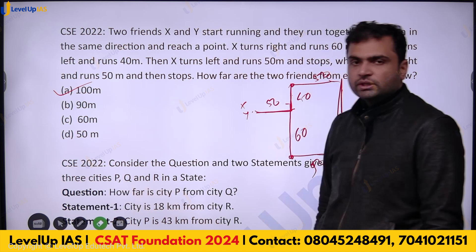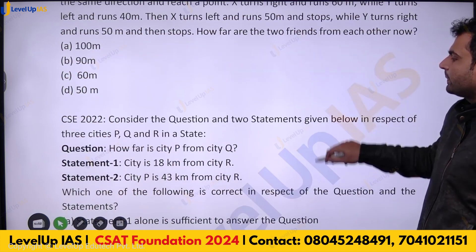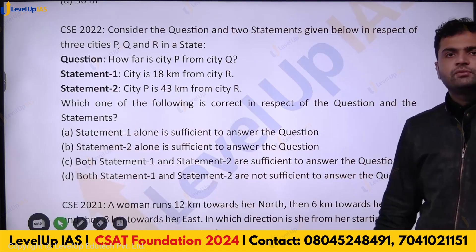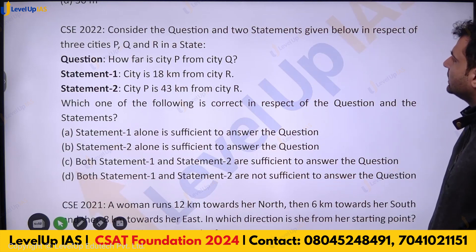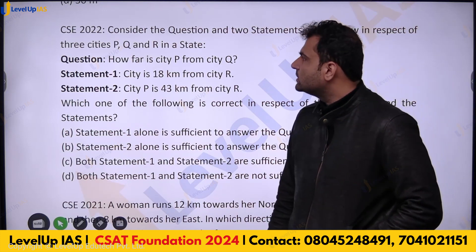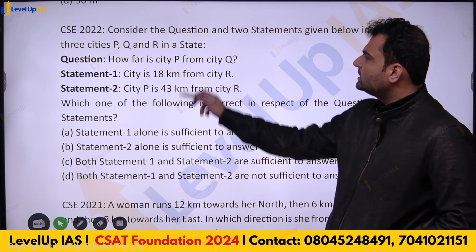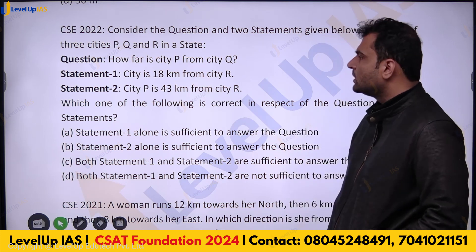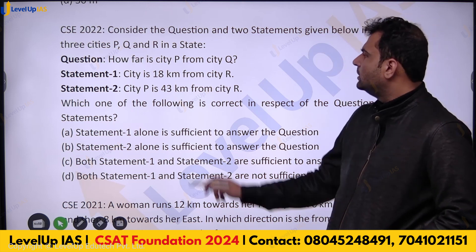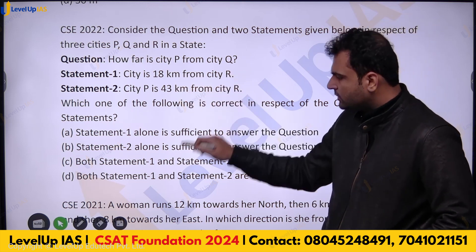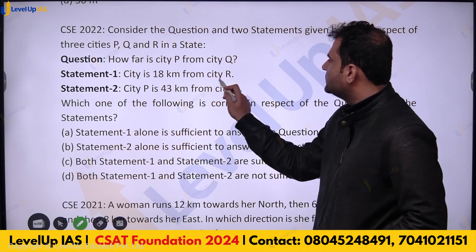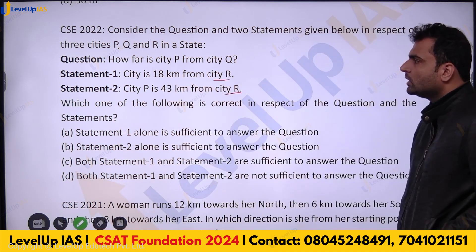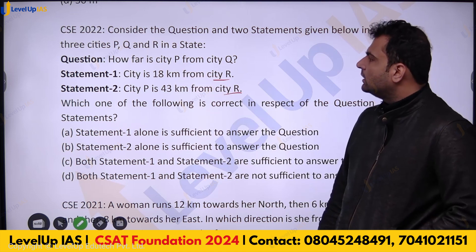These are the easiest type of questions you can get. Next question is from data sufficiency. Consider the statements: we have three cities in a state. The question is, how far is city T from Q? We want to find the distance between P and T. Both statements involve city R.